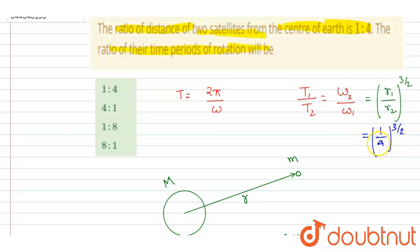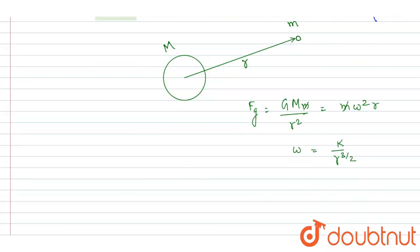So you can see this is (1/4) which is (1/2²). So (1/2²) to the power 3 by 2 will be 1 by 8.